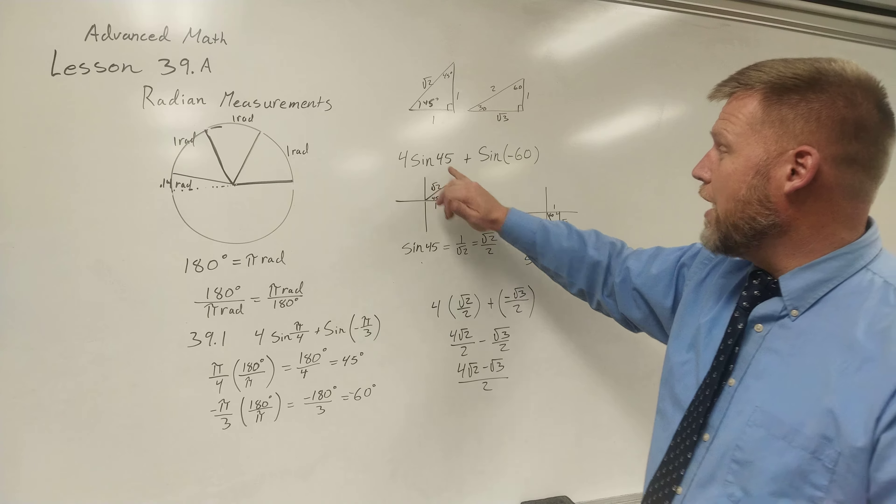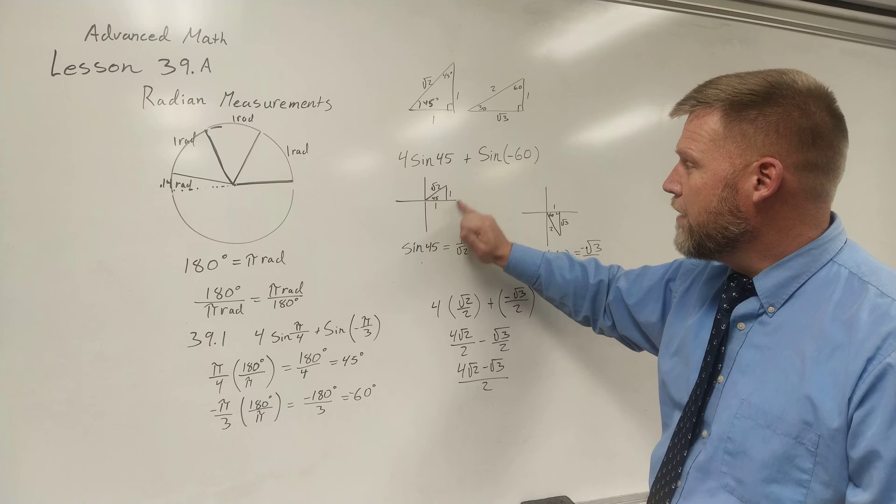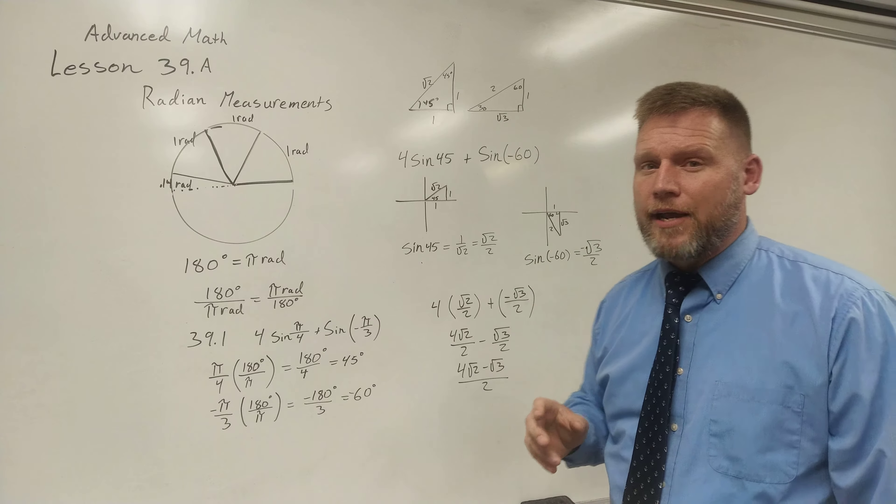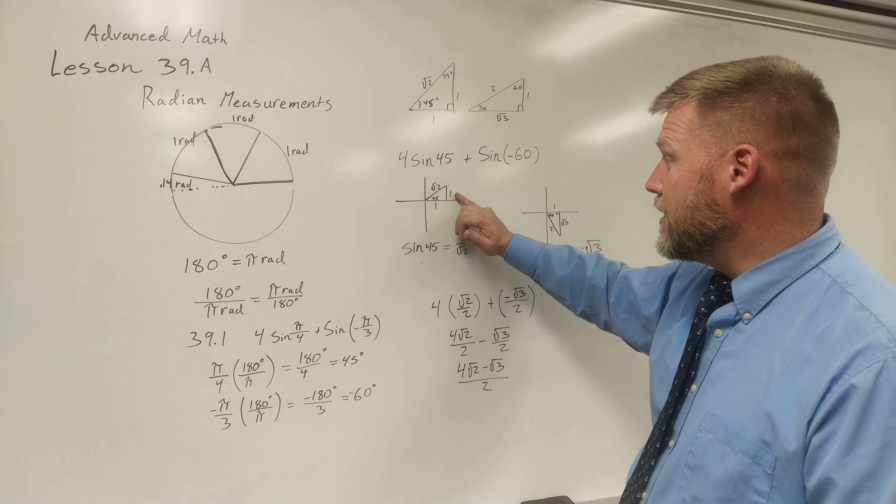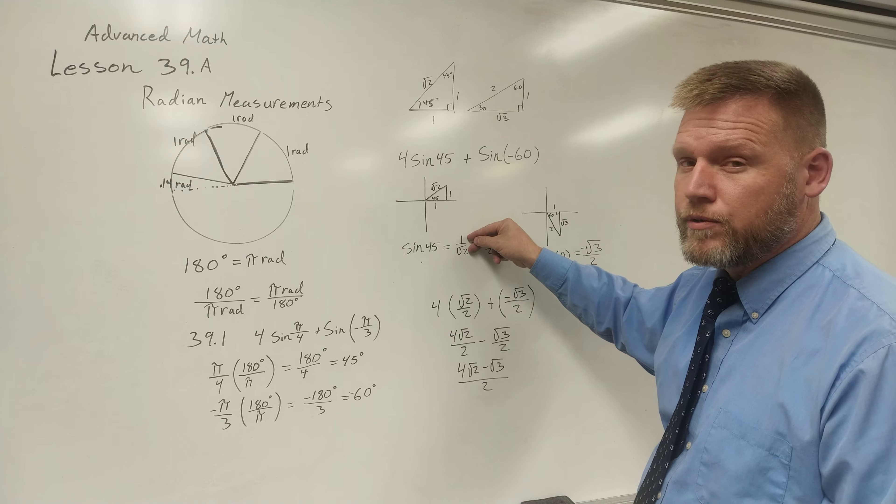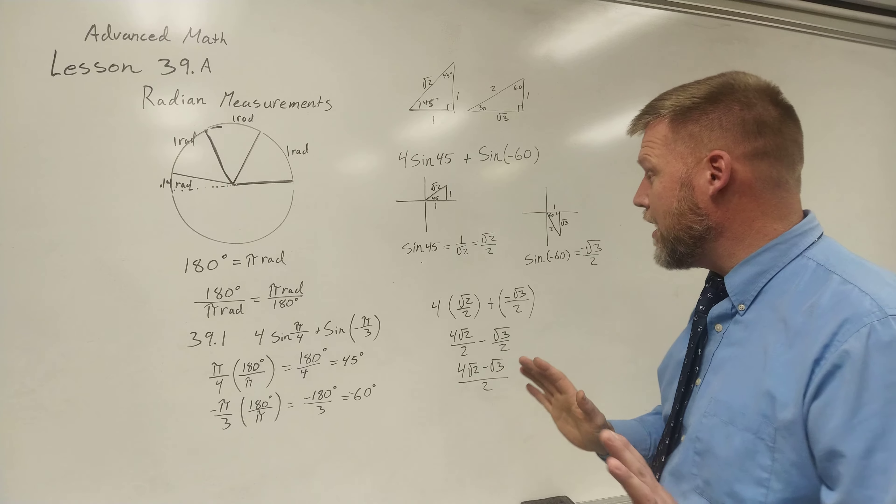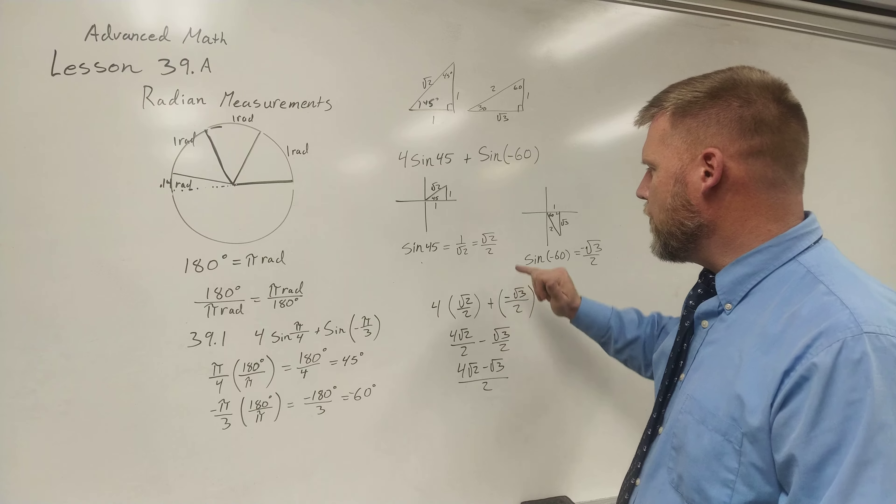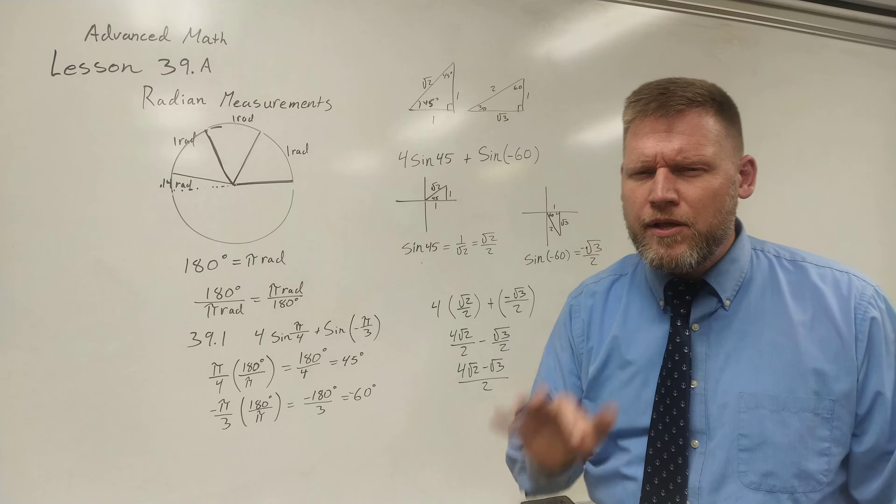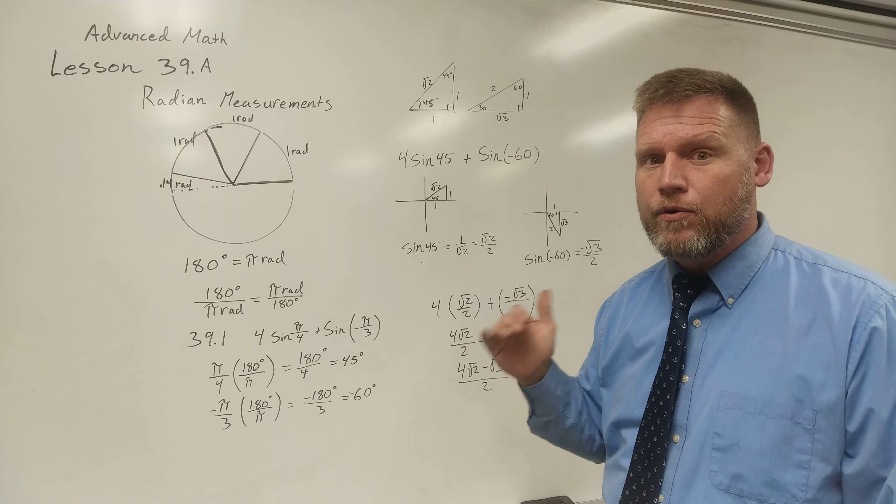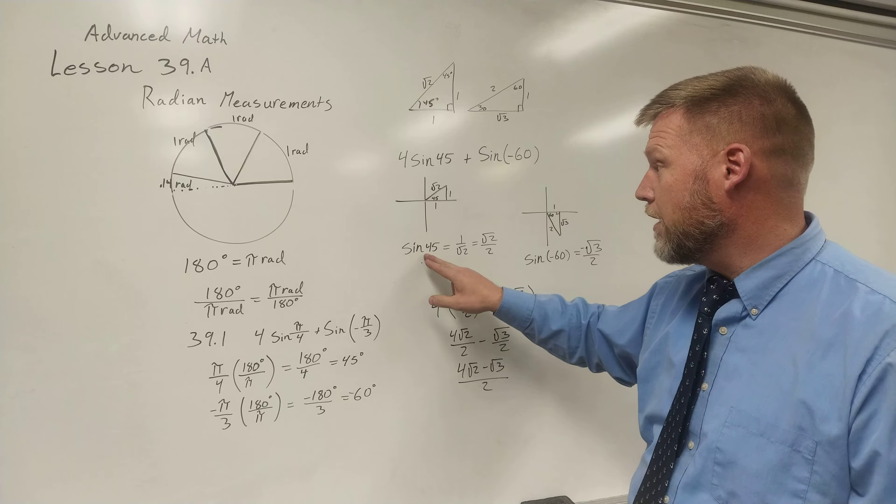4 sine of 45. So I went ahead and drew that in the first quadrant, sine of 45. That's a 1, 1, √2. Well, what is the sine function? The sine is opposite over hypotenuse. So I say the opposite over the hypotenuse, 1 over √2. This is where I did a little differently in the book. The book didn't simplify this step. What I did is I multiplied the top and the bottom by the √2 over the √2 because I immediately knew I don't want to leave a √2 in the denominator. And that gave me √2/2 is equal to the sine of 45.